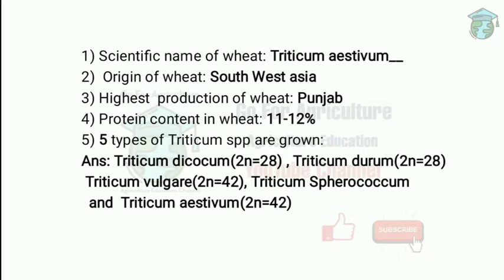Triticum dicoccum, or emmer wheat, is grown in southern states like Maharashtra, Tamil Nadu, and Karnataka. This wheat is called Rava, and the famous item made from it is upma. Triticum durum, also 2N equal to 28, is called macaroni wheat.